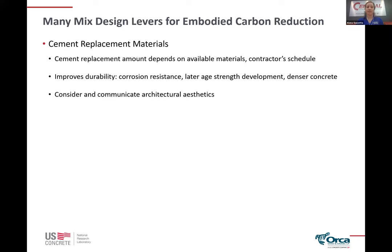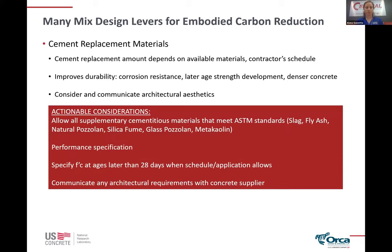The next item is cement replacement materials, which are going to be dependent on what is available locally. Not all parts of the country have the same types. We're talking about materials like slag, fly ash, or natural pozzolan — glass pozzolan is a newer one on the market. These are different powders used in replacement of Portland cement that provide benefits not only in terms of lowering the embodied carbon, but in increasing the durability of the concrete and making it denser. These materials have been used for decades in concrete for reasons other than reducing embodied carbon because they provide great benefit.